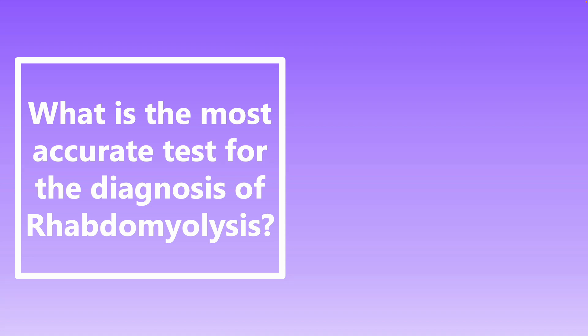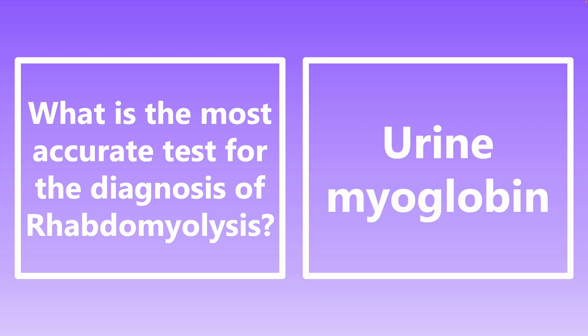What is the most accurate test for diagnosis of rhabdomyolysis? It's urine myoglobin level. In the real world we use serum markers like CK or CPK, but the most accurate test is urine myoglobin to detect the breakdown of myoglobin protein in the urine.